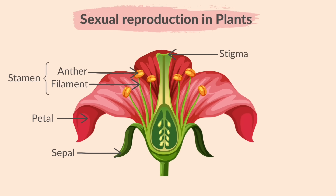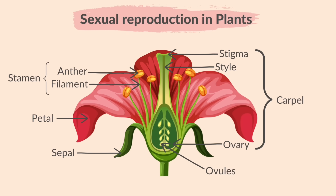The stigma, style, and ovary together are called the carpel and make up the female reproductive part of the flower. The parts are: sepal, petal, anther, filament (stamen), stigma, style, and ovary with ovules inside.